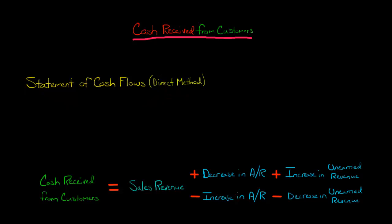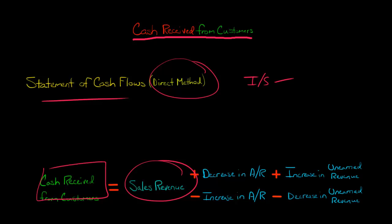If you remember, the whole idea behind the direct method is that when we're doing the operating section, we're actually going to be making a cash basis income statement. We've got our regular income statement, and then we're going to convert all the things on the income statement to the cash basis. When we convert sales revenue to its cash basis, we get cash received from customers. It's sometimes called cash collected from customers or cash receipts from customers, but it's all talking about the same thing. We're basically taking sales revenue from the income statement.